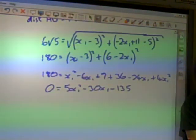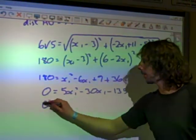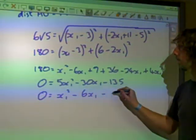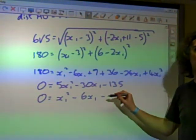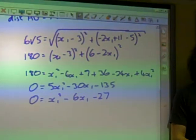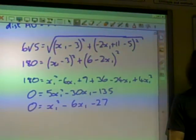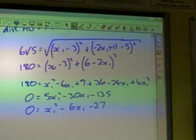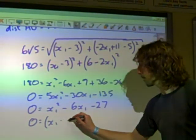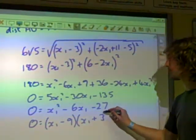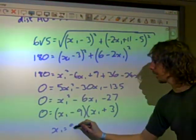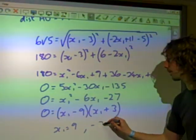It's quite nice to see we've got a common factor of 5 that we can divide through. 5 into 135 goes 27, which hopefully will factorize. 27 is 9 times 3, so it does. We've got at the end of all that our x values being 9 or minus 3.